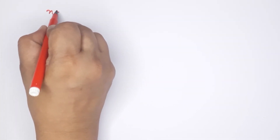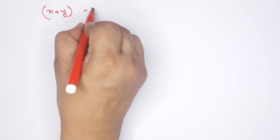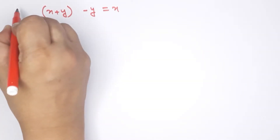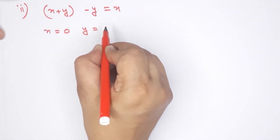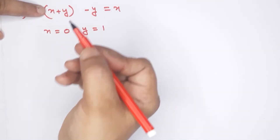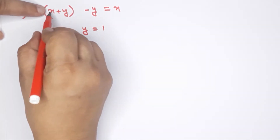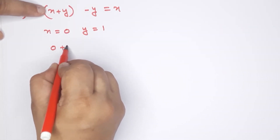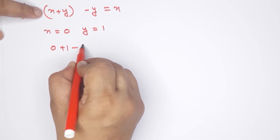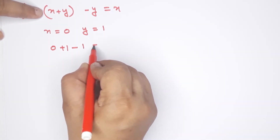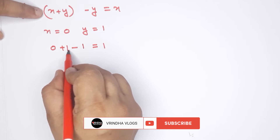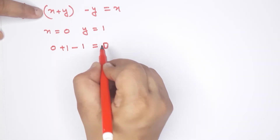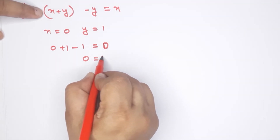Now let's take a second equation: x plus y minus y equals x. This is the second equation. Then x equals 0, y equals 1. Since 1 is the total number, x equals 1, y equals 1, minus 1. This equals x, then x equals 0, then 0 equals 0 — our equation is true.